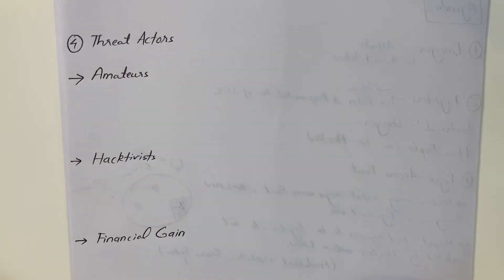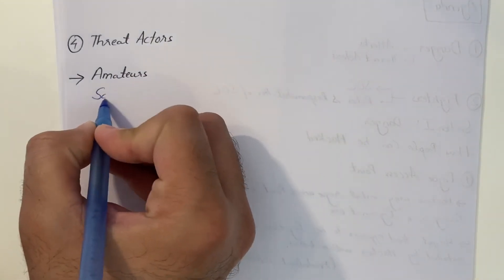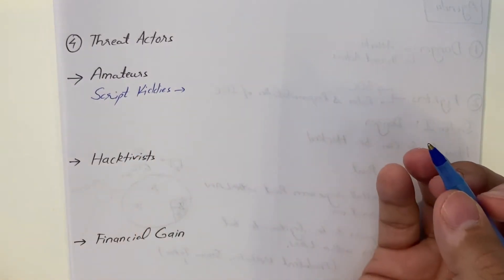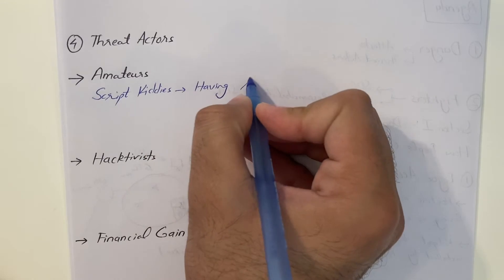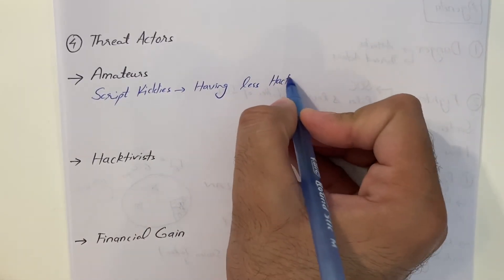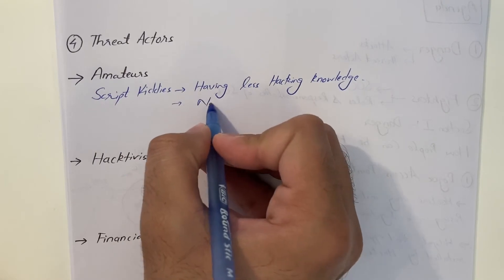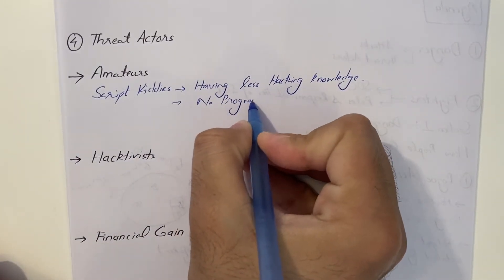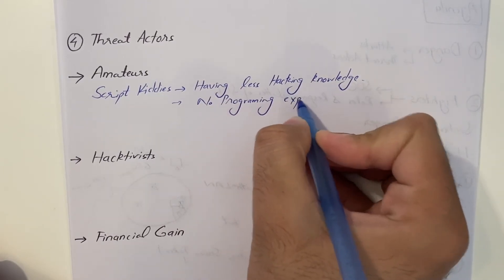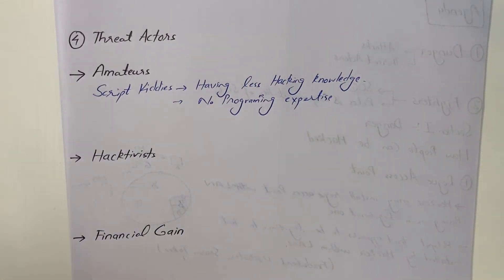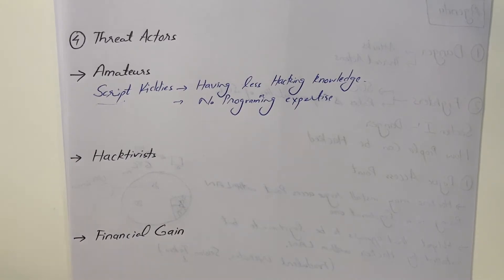Threat actors, I believe everybody's familiar with the first term, amateurs. Amateurs are also known as script kitties. Script kitties, who are they? They basically are having less hacking skills or poor hacking knowledge. They have less hacking knowledge, no programming expertise. What they do is, they use the code or a script written by someone else. That's why we call them script kitties. They don't know what is inside the script. They just get the script written by a professional hacker and trick the people.